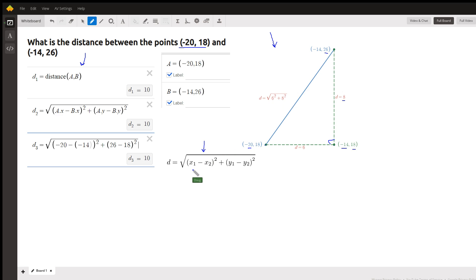So that's what this distance formula is. This is the change in the x-coordinates squared plus the change in the y-coordinates squared.